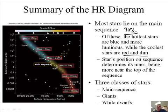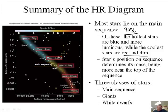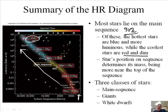A star's position on the sequence determines its mass, with more massive stars near the top of the sequence. Look at this diagram - up here is 20 masses of the Sun, so that's 20 times more massive. And down here in this bottom corner, this is 0.1, or one-tenth of the mass of our Sun. As you go up, the stars get more massive.